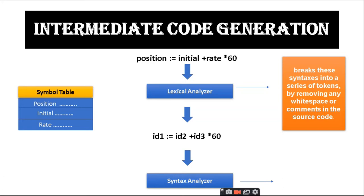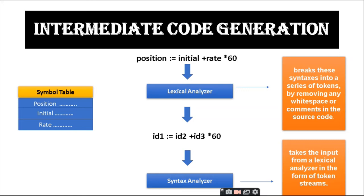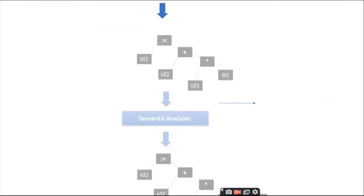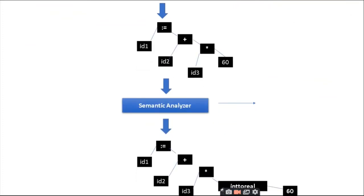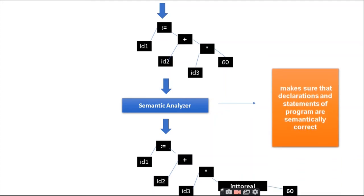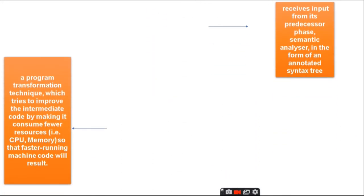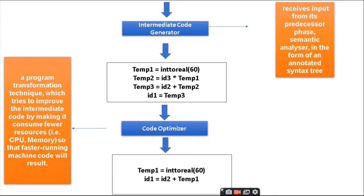Then it goes to the syntax analyzer. The role of the syntax analyzer is to take input from the lexical analyzer in the form of a token stream and generate a parse tree. Then it comes through the semantic analyzer, whose main function is to ensure that declarations and statements of a program are semantically correct and meaningful. Here it converts the real constant stored in integer into a real number. Then it comes through the intermediate code generator.